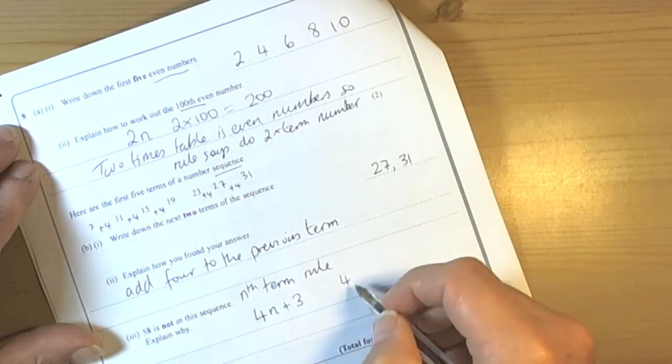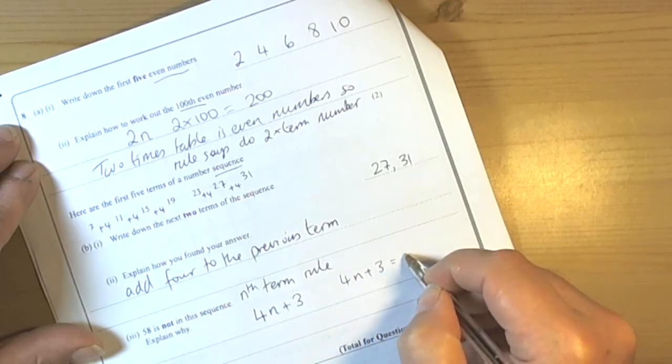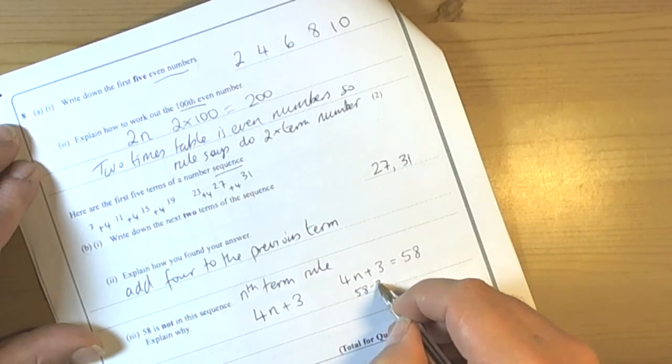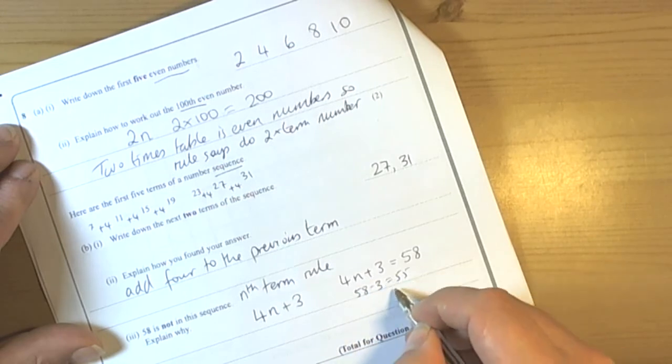If this 58 is going to be part of the sequence then 4n plus 3 must equal 58. And of course we could then go back and solve this. So 58 take away 3 is 55 and then